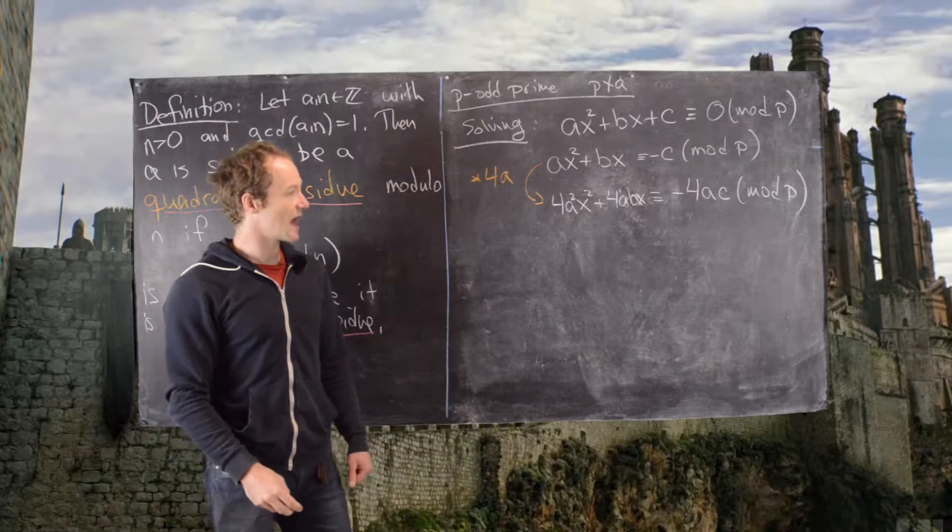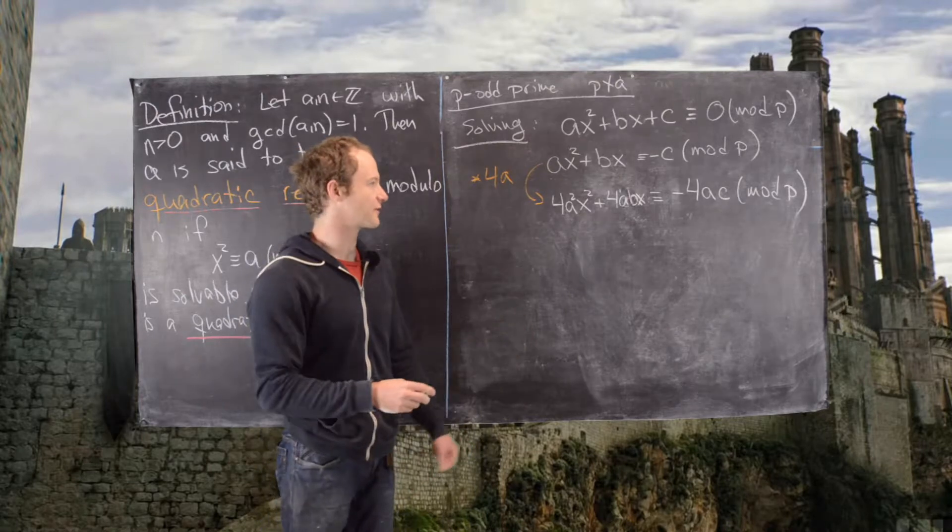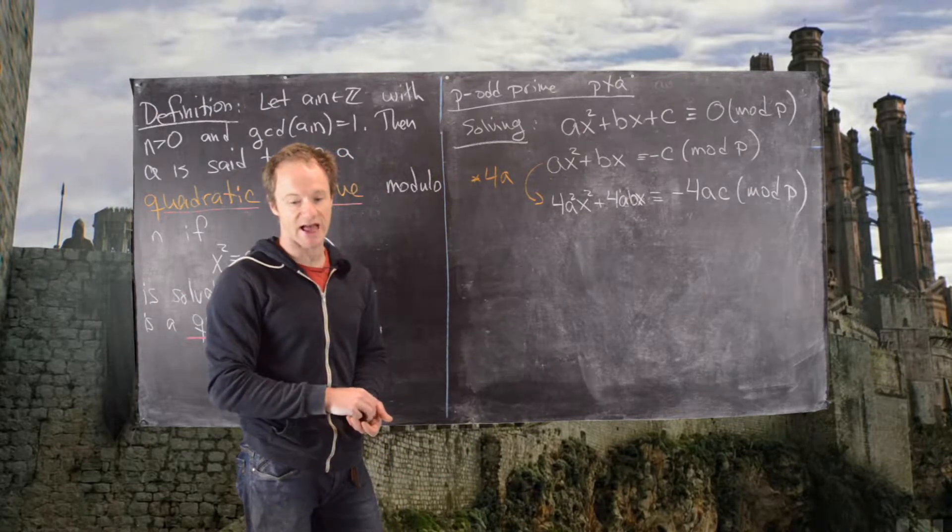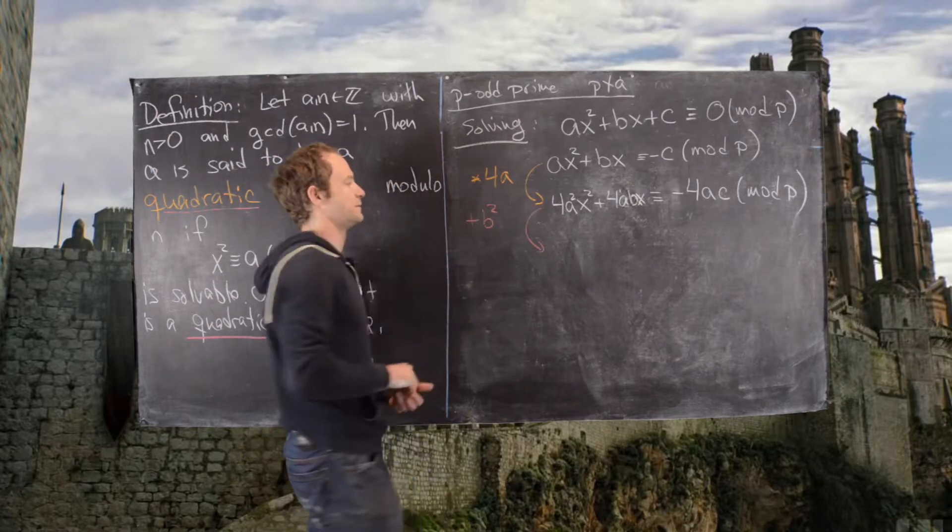Now notice we have got negative 4ac. So that's a term in the quadratic formula, so it's shaping up. Now the next thing that we want to do is add something to both sides. We'll add b squared to both sides.